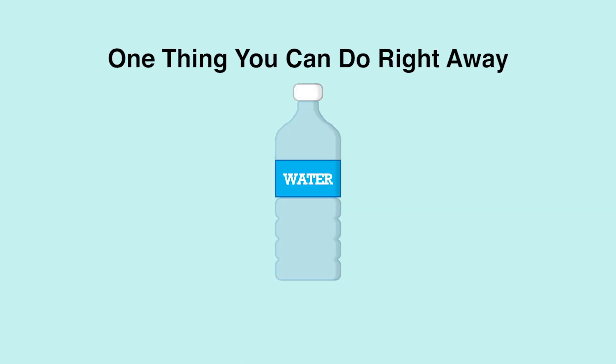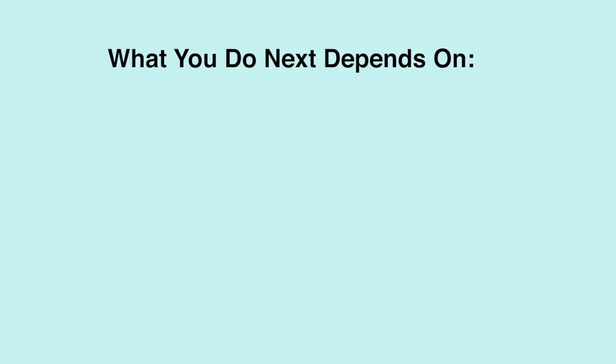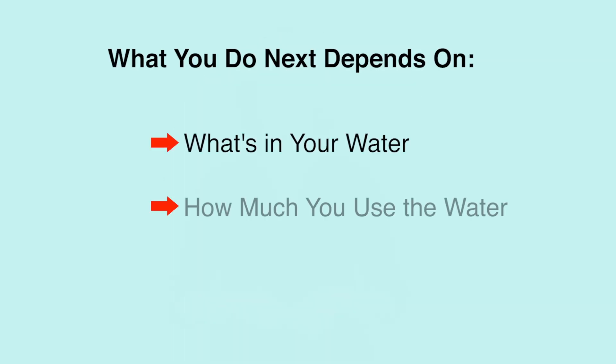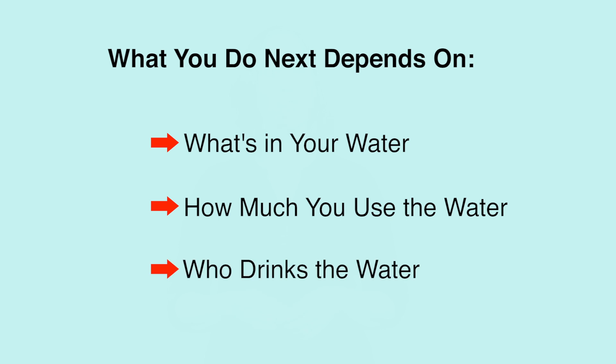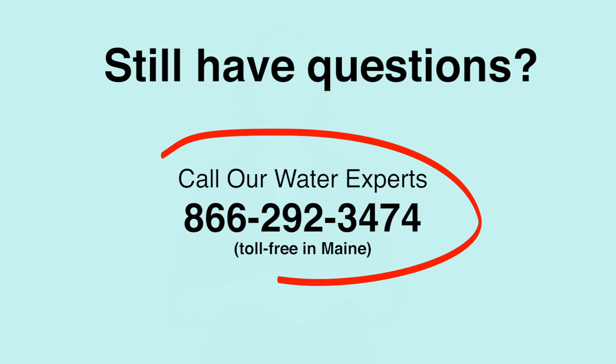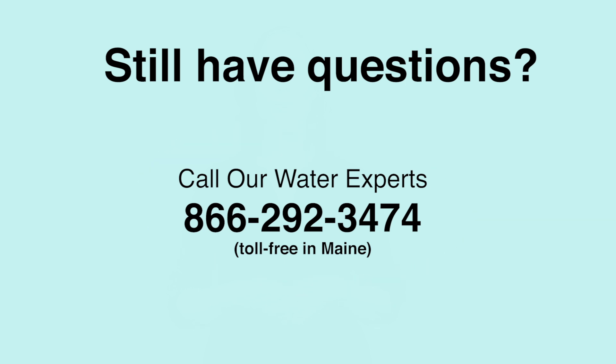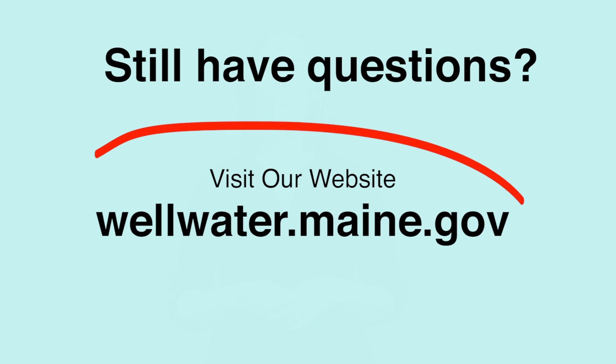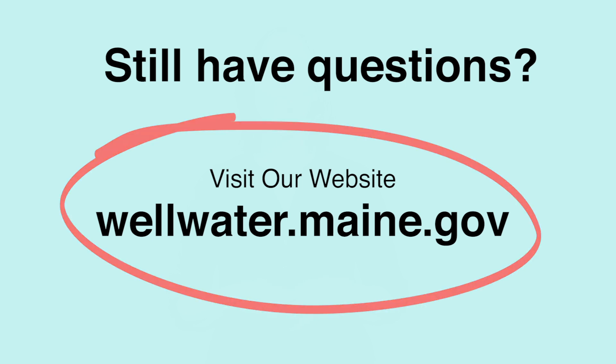Now that you know how to read your test results, what do you do if some of your results are above a guideline? One thing you can do right away is switch to bottled water. This will give you time and peace of mind while you figure out what to do next. What you do next depends on what's in your water, how much you use the water, and who drinks the water. If you still have questions about your test results call one of our water experts. We'll make sure you understand your results and talk through your options. You can also visit our website for more information about common well water problems.